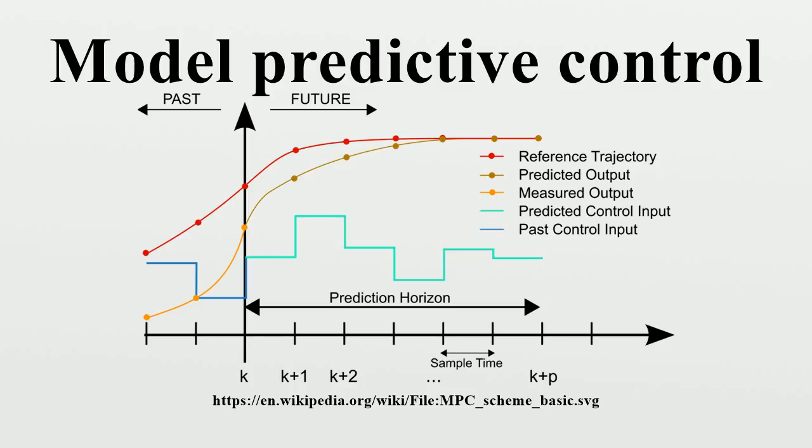In a chemical process, independent variables that can be adjusted by the controller are often either the set points of regulatory PID controllers or the final control element. Independent variables that cannot be adjusted by the controller are used as disturbances.